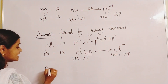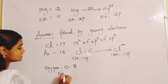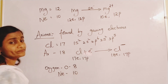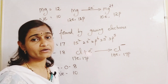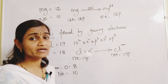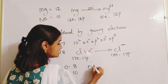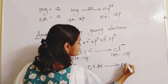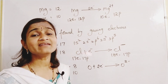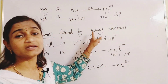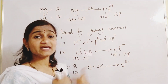Another example: oxygen has atomic number 8 and its nearest inert gas is neon with atomic number 10. To become stable like neon, oxygen gains two electrons, forming O²⁻ ion. So negatively charged ions are formed by gaining electrons, and they are called anions.